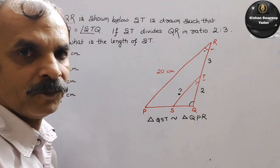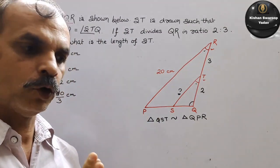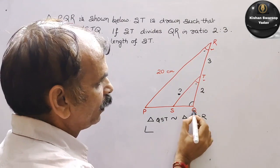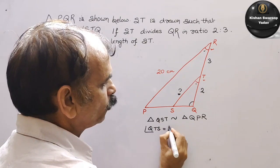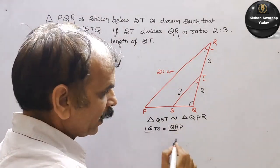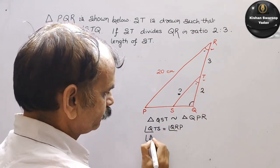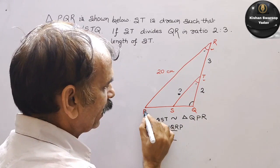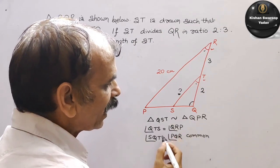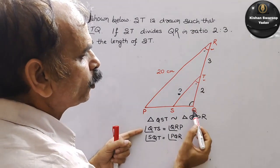Toh agar yeh similar hai, toh sides will go into proportion. Jo cheez humne AA karke li thi, woh hi aapko lena hai — chote mein aur bade mein. Toh dekho: first is angle T — toh yeh aapka ho jaega angle QTS is equal to angle QRP, dono angle. Second angle dekho — SQT is equal to angle PQR — yeh aapka common hai.